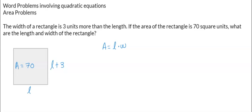So we have the word problem: the width of a rectangle is three units more than the length, which I wrote right here. If the area of the rectangle is 70 square units, what is the length? So the length I wrote right here. Since this is the width, the length is three more, so it's length plus three. So what are the length and the width of the rectangle?